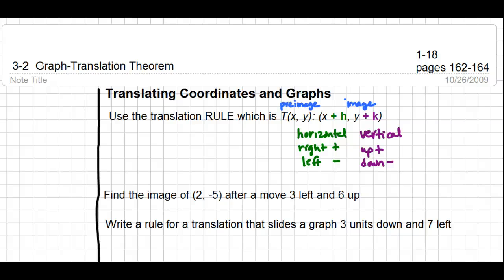This lesson is for FST Lesson 3-2 on the Graph Translation Theorem. We're going to look at how to translate things in two different ways. The first thing that we're going to look at is translating coordinates and graphs.